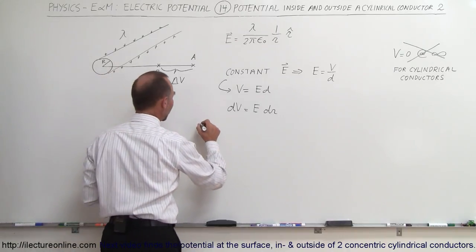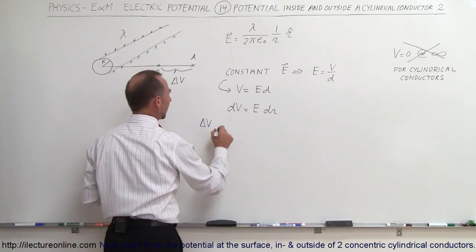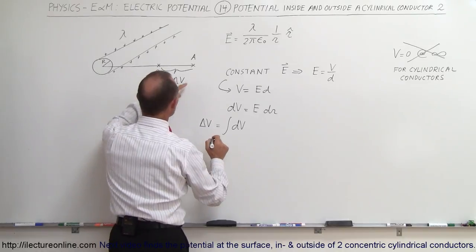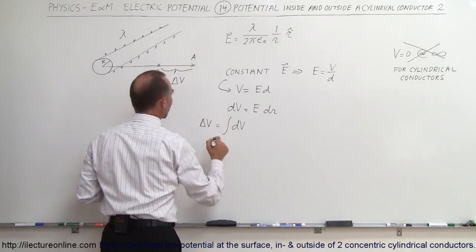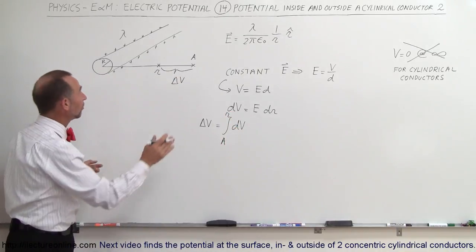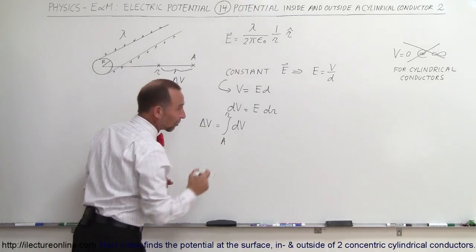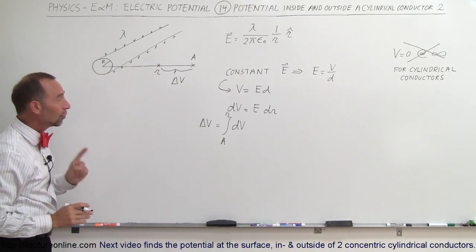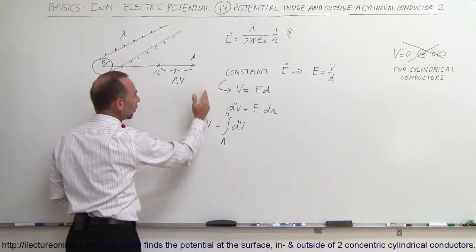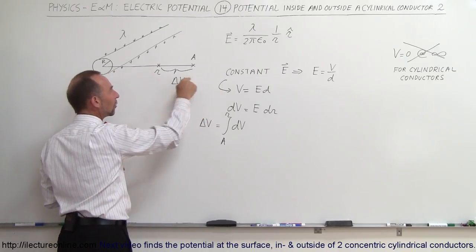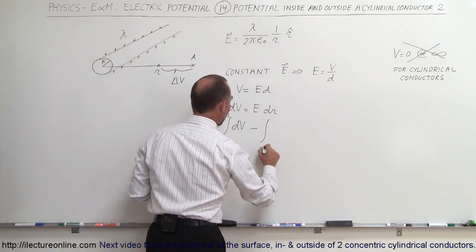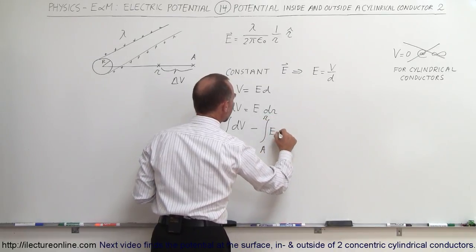The change in potential is going to be the integral of the small changes dV, going from the initial point A and moving to R. R then represents any point between A and R — R could actually be farther away than A. We have to realize that the farther away we go from the conductor, the lower the potential; the closer we get, the higher the potential. So as R increases, V decreases, which means we're going to need a negative integral from A to R of E dr.